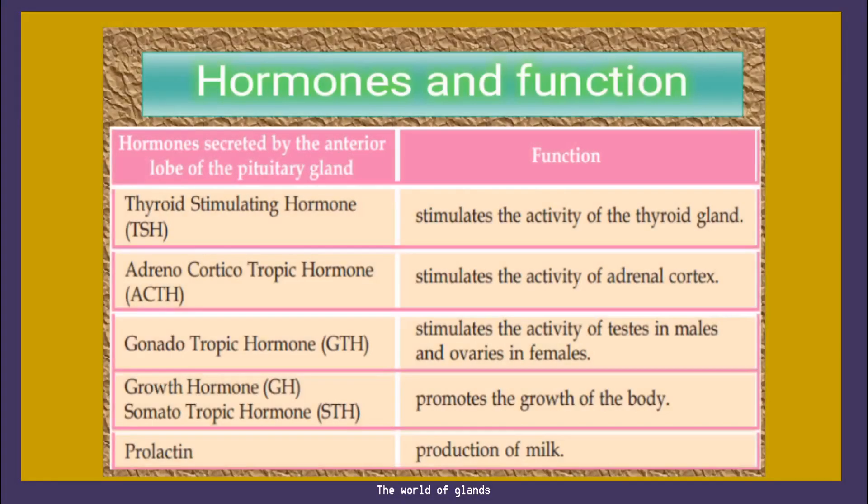Let's see the functions of the various hormones produced by the pituitary gland. Thyroid stimulating hormone (TSH) stimulates the activity of the thyroid gland. Adrenocorticotropic hormone (ACTH) stimulates the activity of the adrenal cortex. Gonadotropic hormone (GTH) stimulates the activity of testes in males and ovaries in females. Growth hormone (GH), also known as somatotropic hormone (STH), promotes the growth of the body. Prolactin helps in the production of milk.